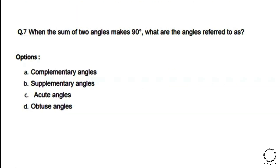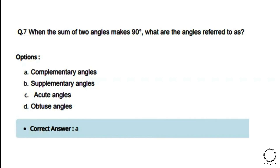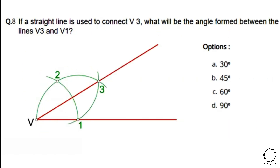Next: When the sum of two angles makes 90 degrees, what are the angles referred to as? Options: a) complementary angles, b) supplementary angles, c) acute angles, d) obtuse angles. The right answer is option A — complementary angles. Moving on, these are all answers from the mathematics section.